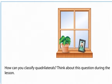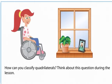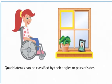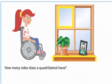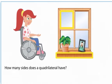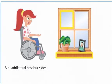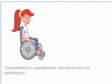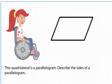How can you classify quadrilaterals? Think about this question during the lesson. Quadrilaterals can be classified by their angles or pairs of sides. How many sides does a quadrilateral have? A quadrilateral has four sides. This quadrilateral is a parallelogram.